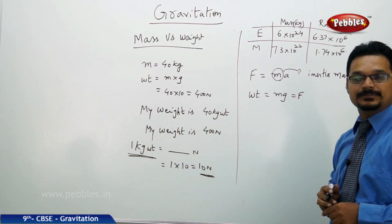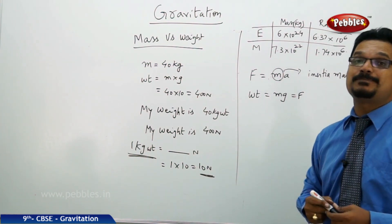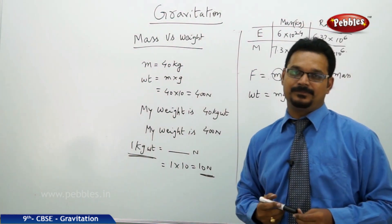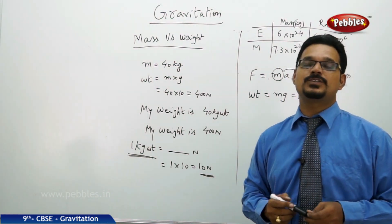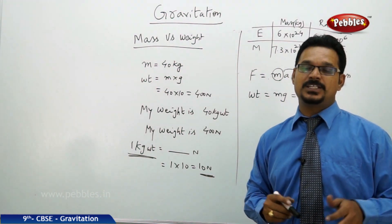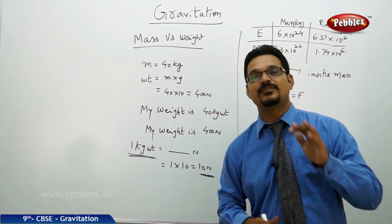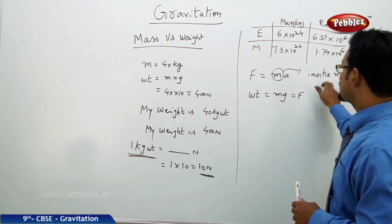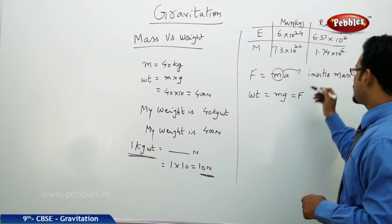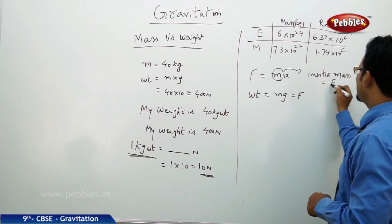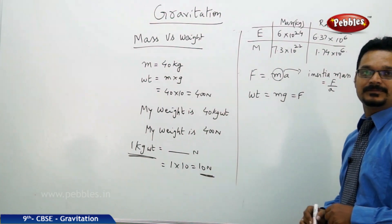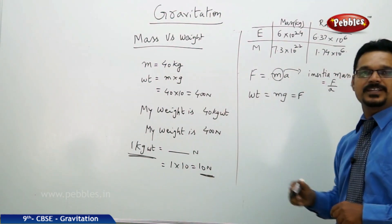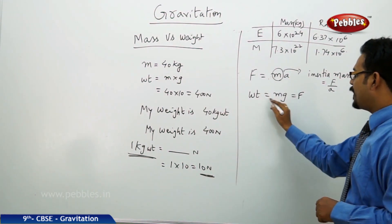This mass in F equal to ma is called inertial mass. The mass responsible for the inertia—remember in Newton's laws we discussed inertia, the tendency of a body to be in the state of rest or to be in uniform motion. So that is inertial mass, and inertial mass formula is F by a.